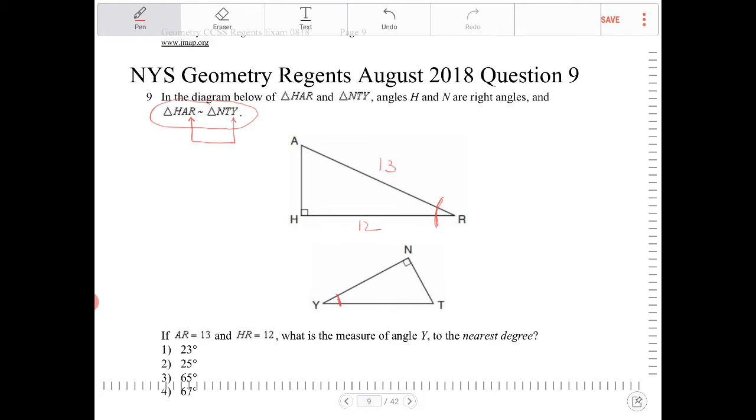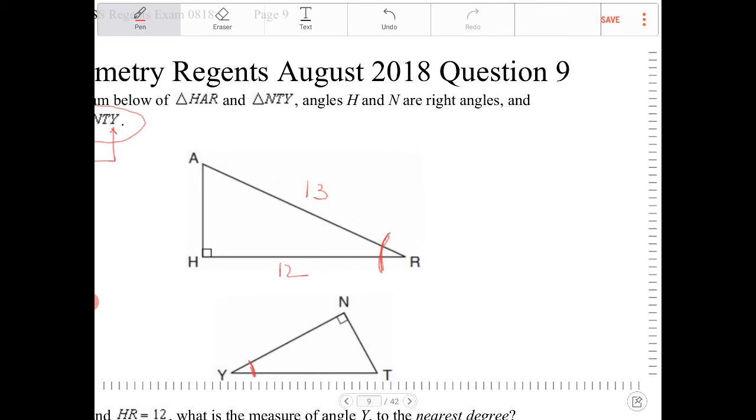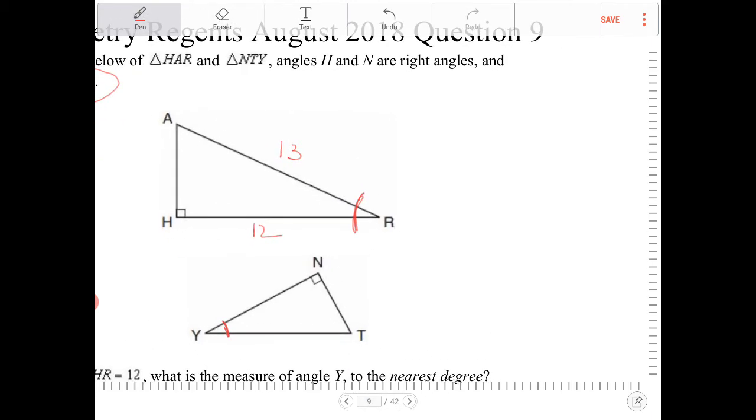Angle R is the included angle between 12 and 13. 12 is adjacent to angle R, and 13 is hypotenuse. Therefore, I'm going to use a cosine ratio. Cosine of R is equal to 12 over 13. And then to get R out of the cosine function, we're going to take the arc cosine of 12 thirteenths.